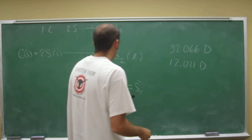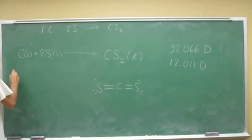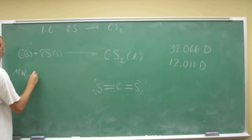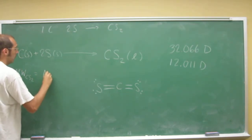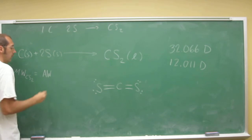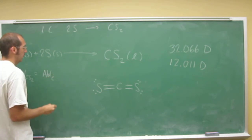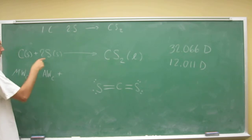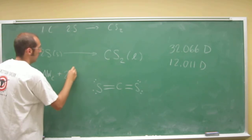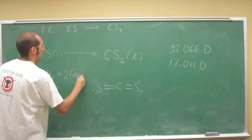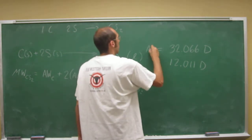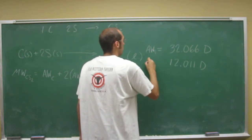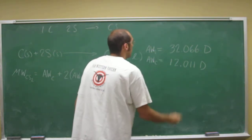Okay, so how do I figure out what the molecular weight is? So the molecular weight of carbon disulfide is going to equal the atomic weight, if you will, of carbon plus two times the atomic weight of sulfur. And so you've got the atomic weight of sulfur here and the atomic weight of carbon here.